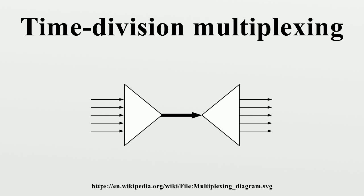There are three types of synchronous TDM: T1, SONET, SDH, and ISDN.